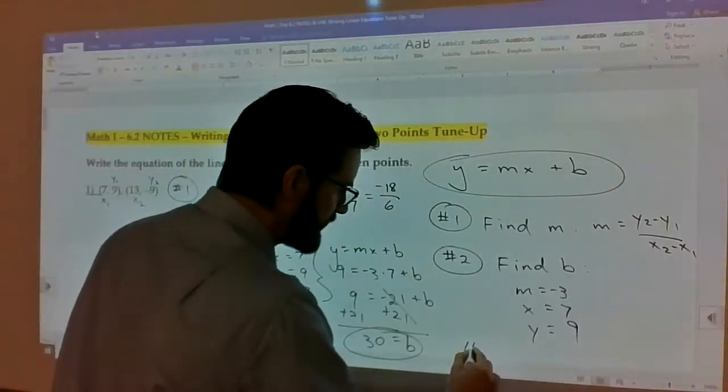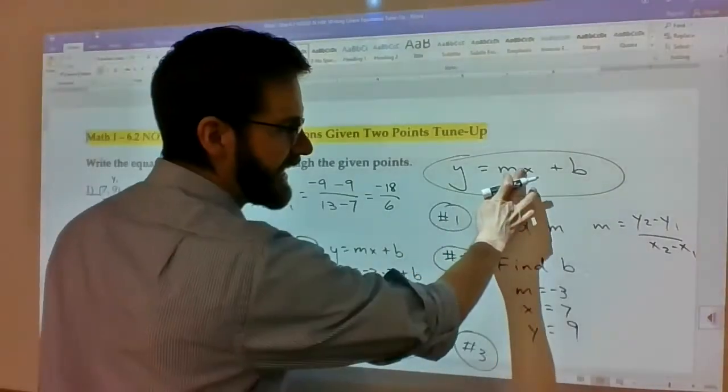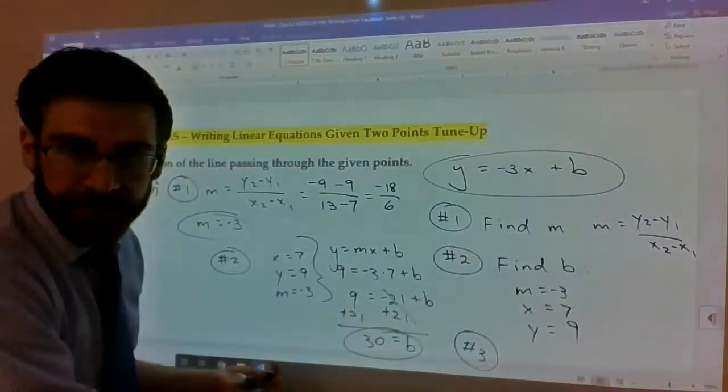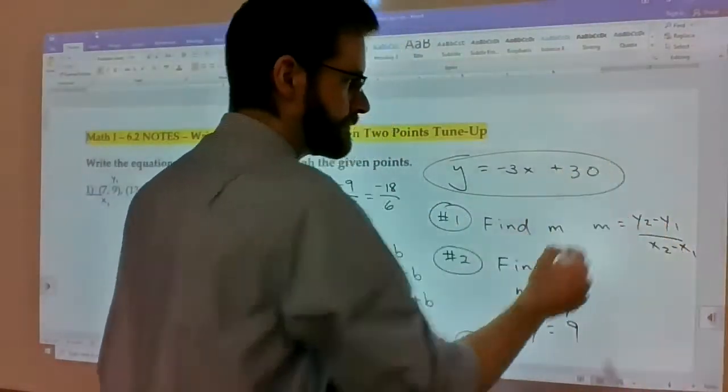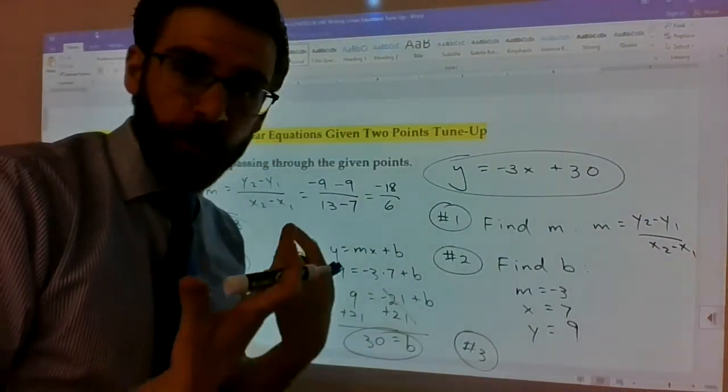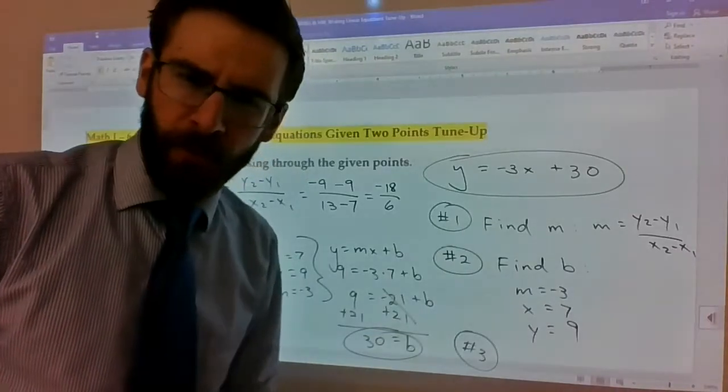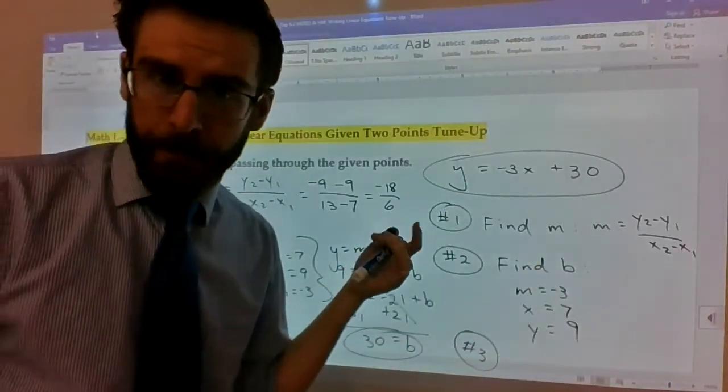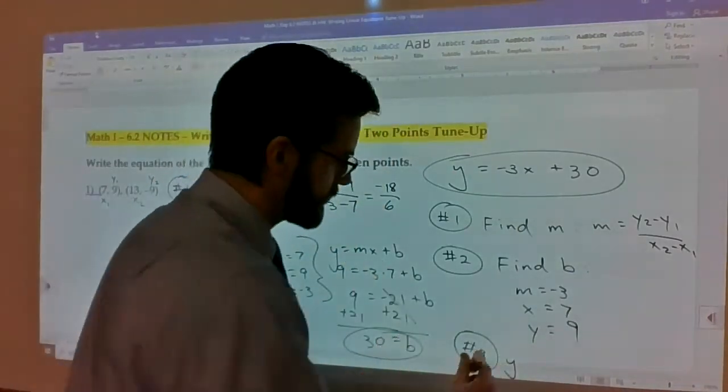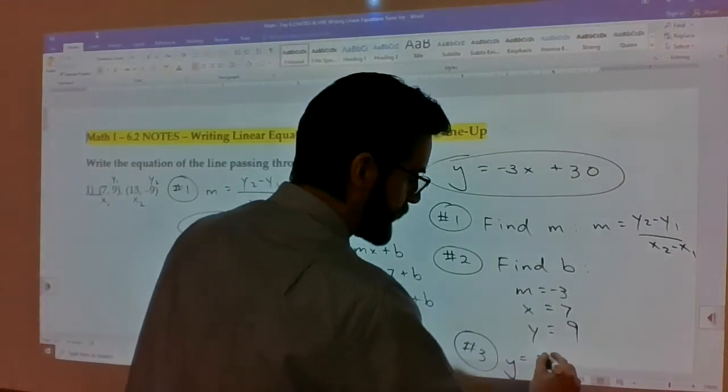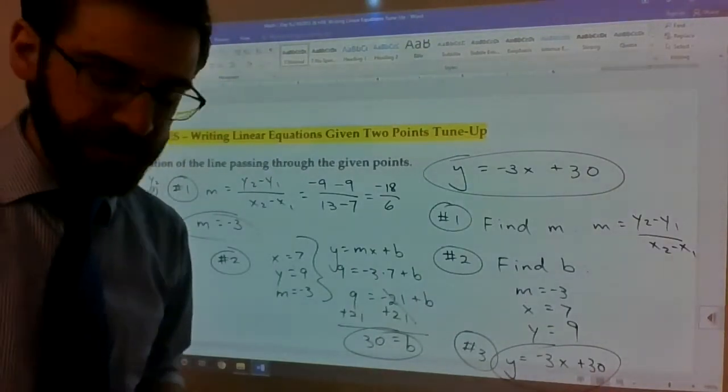In order to find b, I've got my m which is negative 3. Now I'm going to choose one of these x1, y1 or x2, y2's to actually plug in to the formula. I think I'm going to pick the 7 and the 9 because they're both positive. So I'm choosing x equals 7 and y equals 9 to now plug into this equation. And there you go. That's how you write an equation of a line.